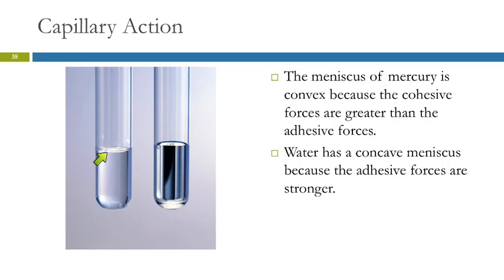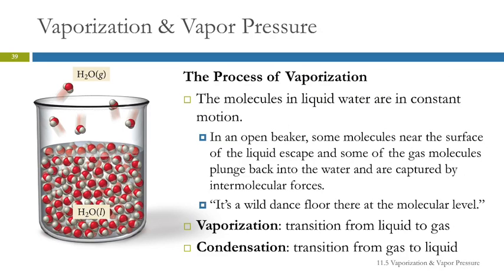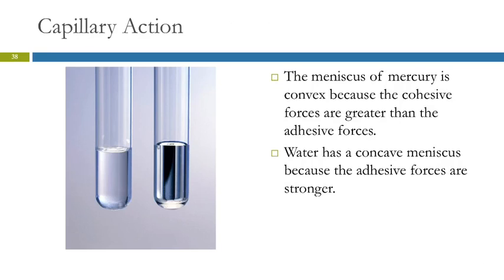We've observed the meniscus that water forms — in lab we always measure to the bottom of the meniscus. What causes that? It's capillary action. The water has an adhesive force with the glass and is drawn up the side, trying to do capillary action, but the graduated cylinder is too large for it to really get anywhere — so the edges creep up and we get this concave meniscus. Mercury, on the other hand, is not attracted to the glass and is very attracted to itself, so it forms a convex meniscus, bulging up in the middle instead of going down. On mercury you'd measure to the top of the meniscus.